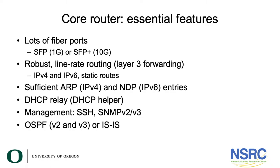We want robust line-rate routing, so Layer 3 forwarding supporting IPv4 and IPv6 as well as static routes. We need sufficient ARP for IPv4 and Neighbor Discovery Protocol for IPv6. We need DHCP relay or DHCP helper depending on what the vendor calls it, and we need proper management using SSH, SNMP version 2, or preferably SNMP version 3. For routing protocols, at least OSPF — including OSPFv2 and OSPFv3 — or IS-IS.